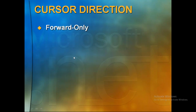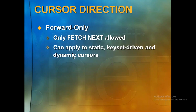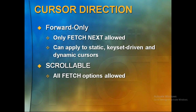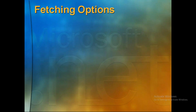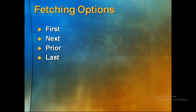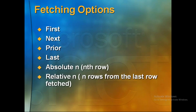Cursor direction: forward-only allows only FETCH NEXT. Scrollable cursors allow all fetch options — FETCH NEXT, FIRST, PRIOR, LAST, ABSOLUTE nth row, and RELATIVE nth row. These scrollable fetch options apply to static, keyset-driven, and dynamic cursors. Fast-forward-only means forward-only but purely read-only — you cannot update.